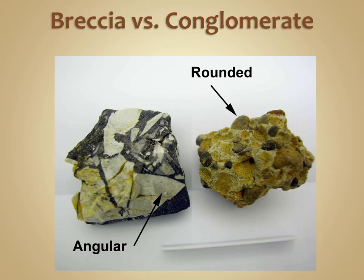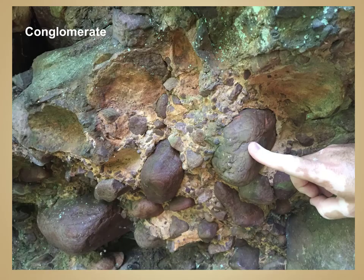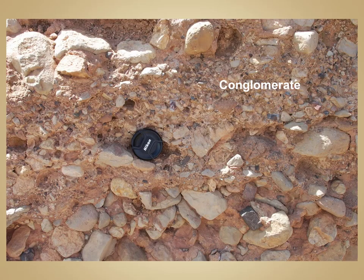If you look at breccia and conglomerate side by side, you can clearly see the angular nature of the particles that make up breccia versus the much more rounded particles that make up conglomerate. These photographs also show that rounded, cobble-sized, coarse-grained nature of conglomerate. Notice that most of these are poorly sorted, meaning you have larger particles in a much more fine-grained matrix.